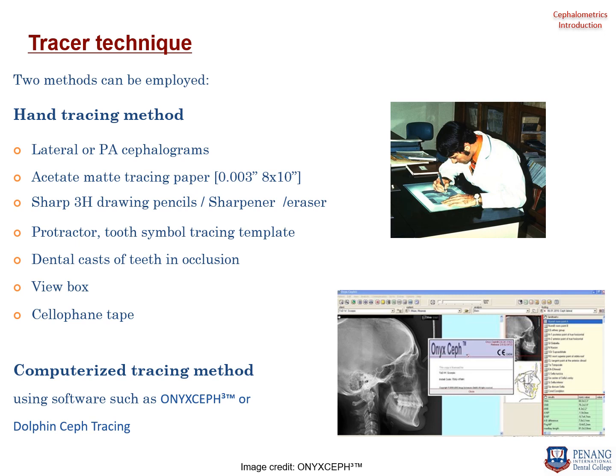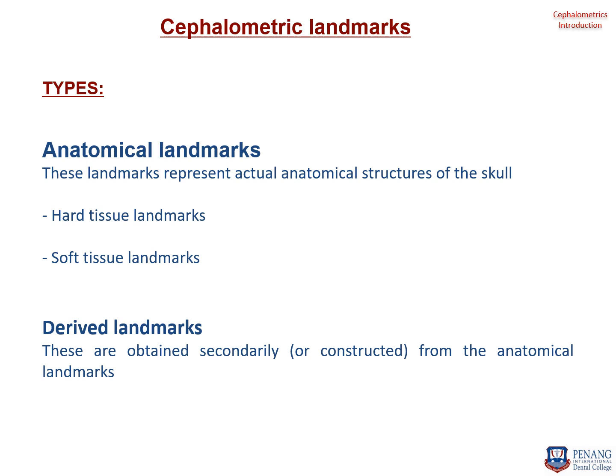A more advanced method is the computerized tracing method, using commercially available software such as OnyxCeph or Dolphin. You upload a digital cephalogram onto the software and are then able to construct angles, locate and identify landmarks, and perform all sorts of analyses. At your current stage you will be doing hand tracing, though if there is enough time we may get a chance to try OnyxCeph.